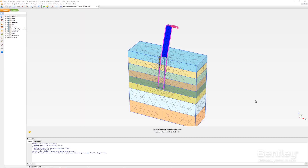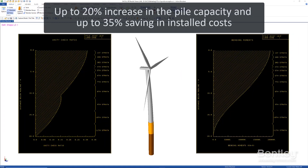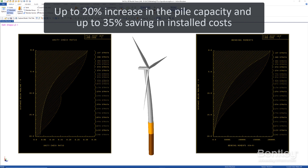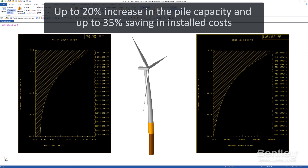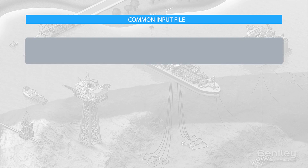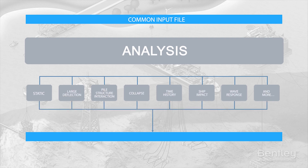Using the PISA 2 design methods with the SACS-Plaxis integration provides up to 20% higher design capacity and potential 30 to 40% savings in installed costs. You can improve your analysis and design process with workflows optimized for offshore structures.